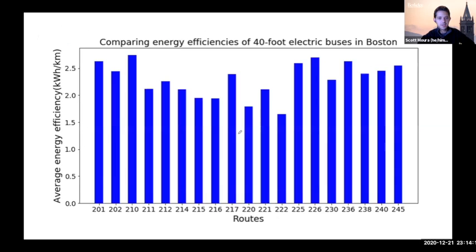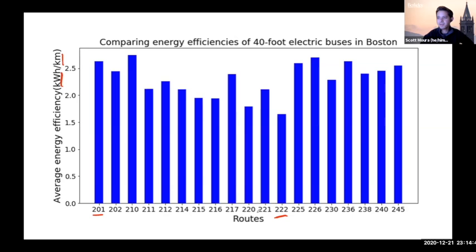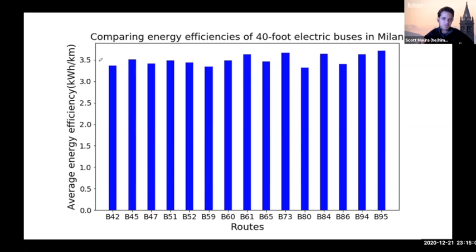Here are example results showing average energy efficiency — or inefficiency — in kilowatt hours consumed per kilometer driven. The higher the number, the more energy consumed per kilometer. In Boston, it's about 2 to 2.5 kWh/km depending on the routes, with some routes like Route 222 showing low inefficiency and Route 210 showing high inefficiency. Similar numbers for Milano show not as much variance but the total inefficiency is actually a bit higher. These are computed at quite cold temperatures to get a conservative value for what energy inefficiency would be on a very cold day with the heater running.